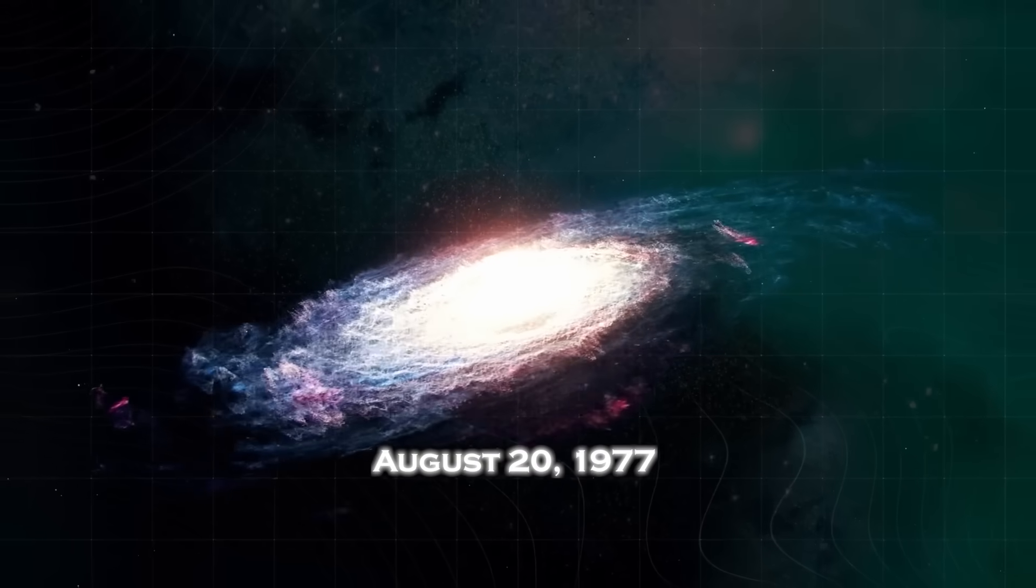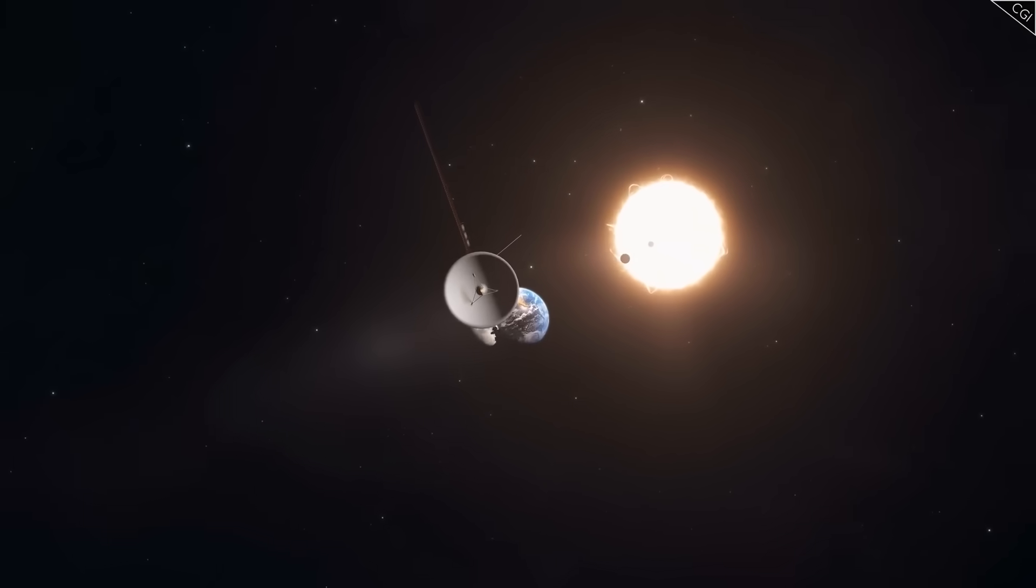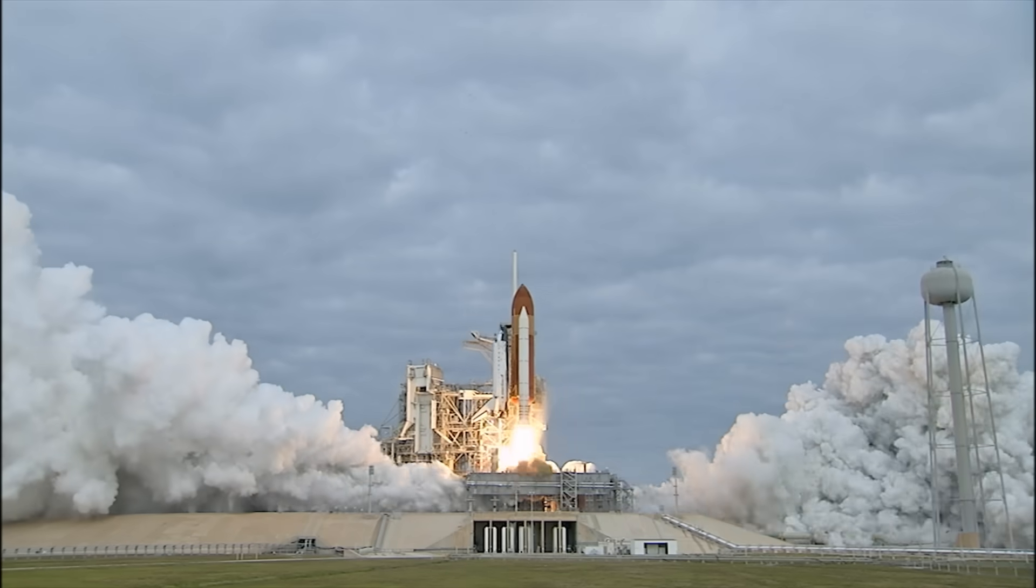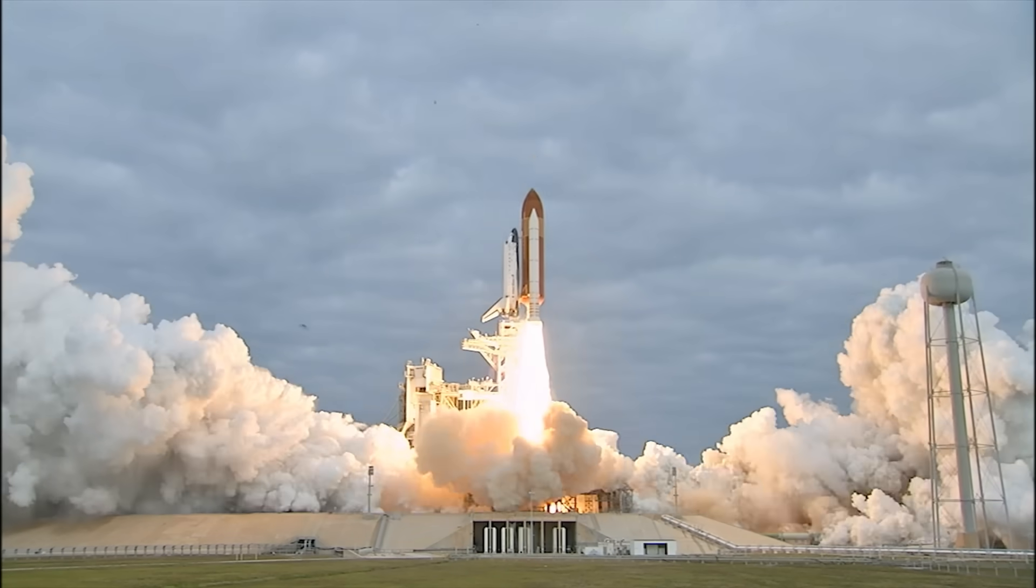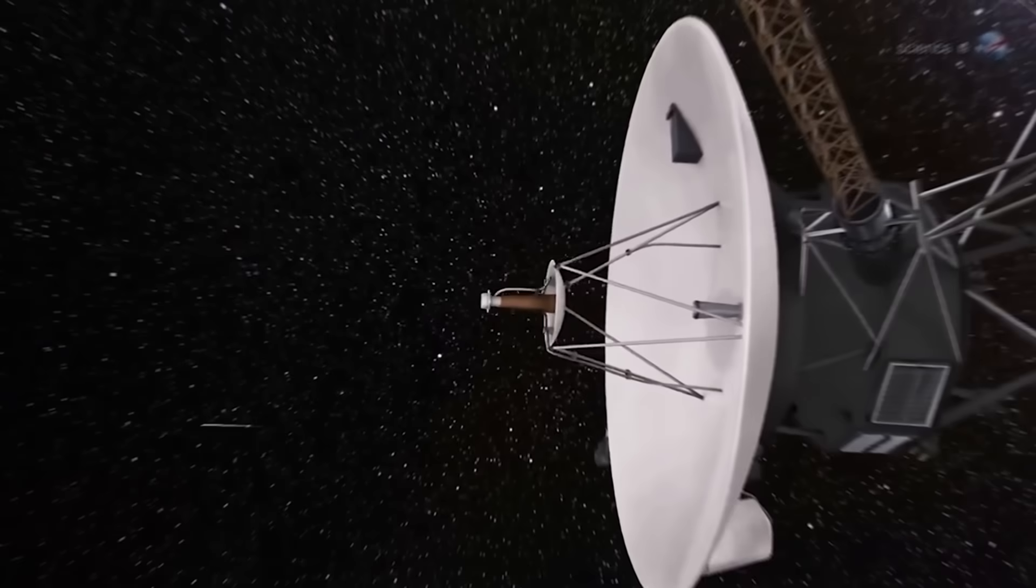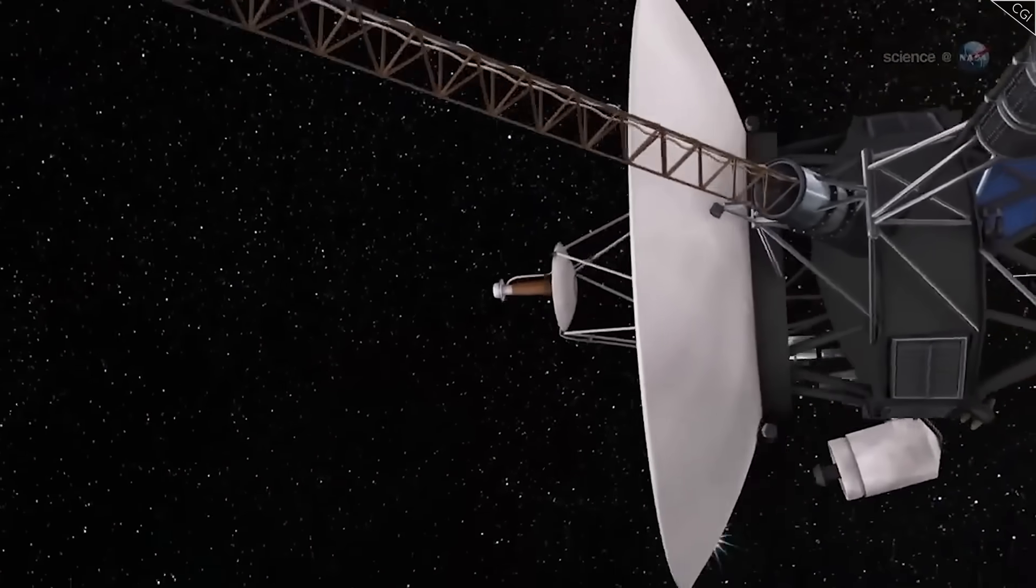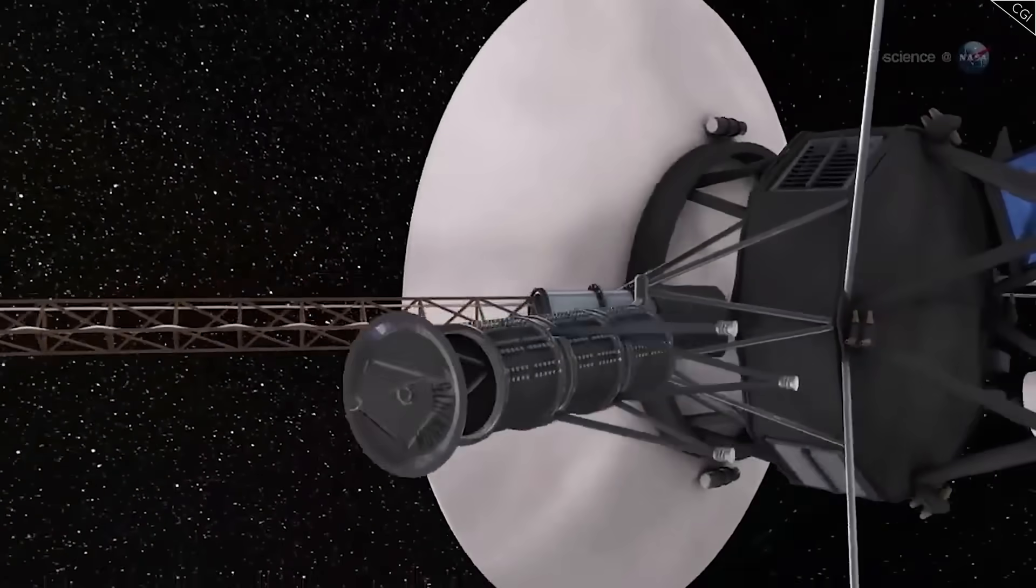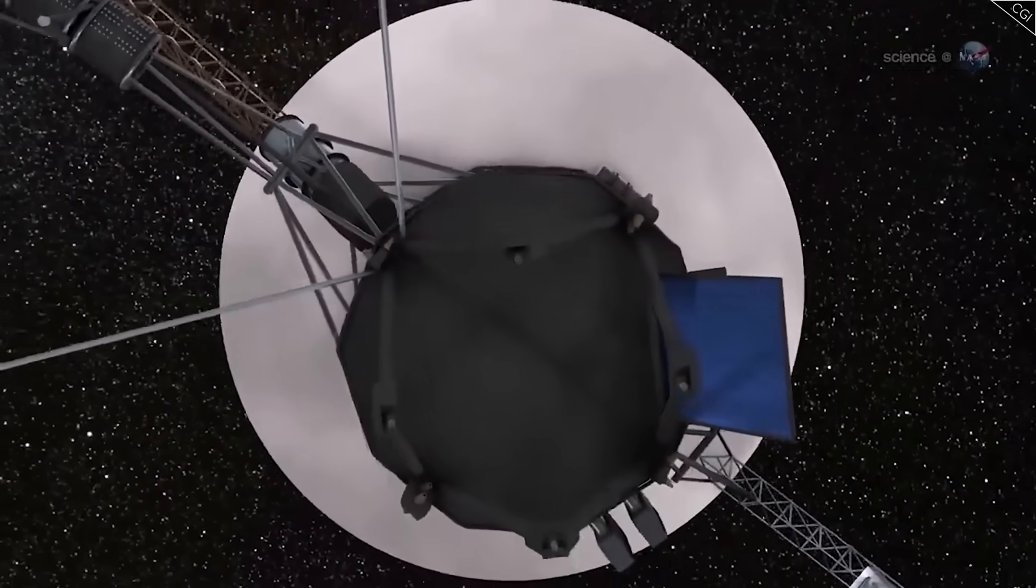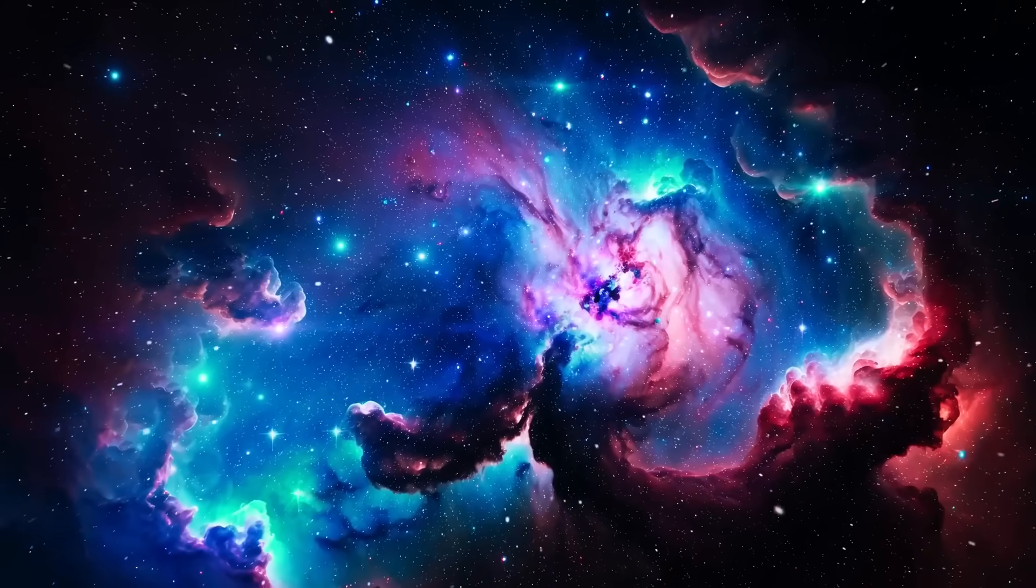It all began in 1977, when Voyager 1 and its twin, Voyager 2, were launched to ride a once-in-a-lifetime alignment of the outer planets. With less memory than a digital watch and power equivalent to a refrigerator light bulb, these probes were never meant to survive half a century. Yet somehow, they did.